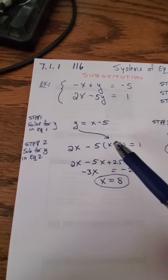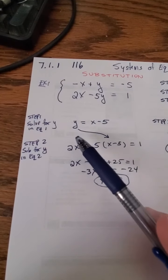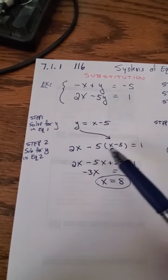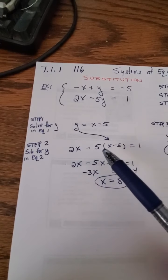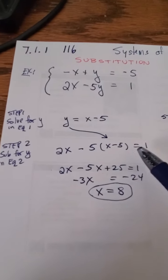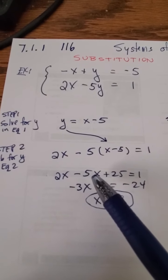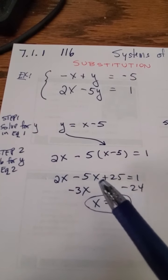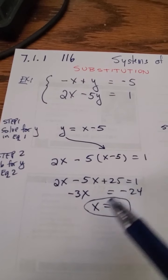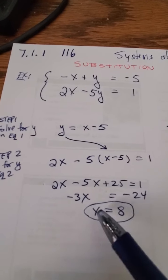Why did I do that? Because now I have an equation with just one variable. I know how to solve that. So that becomes two x minus five - now I'm distributing the five - five x plus 25 equals one, and I very easily solve that: x equals eight.